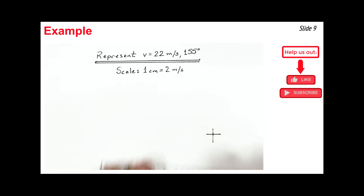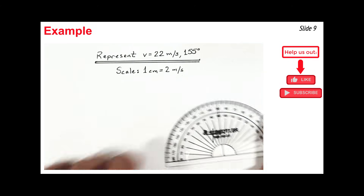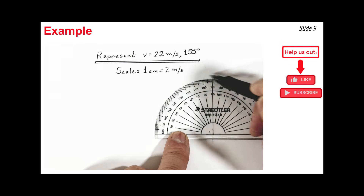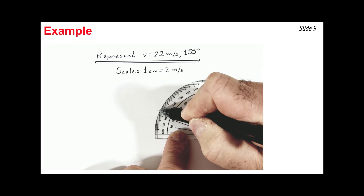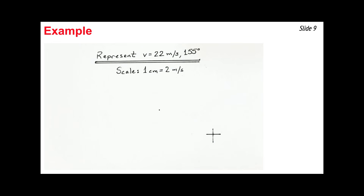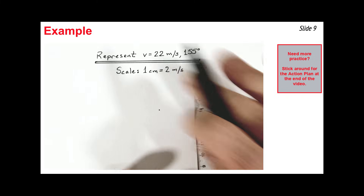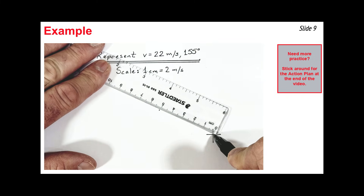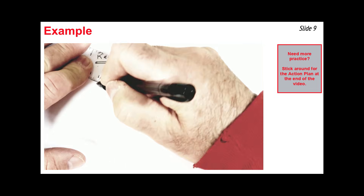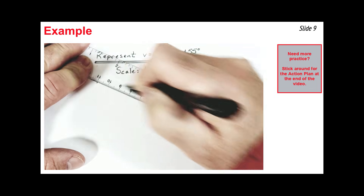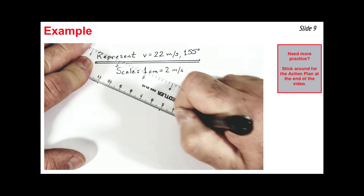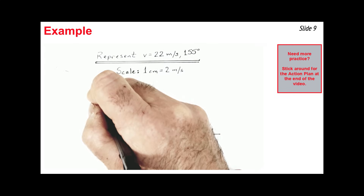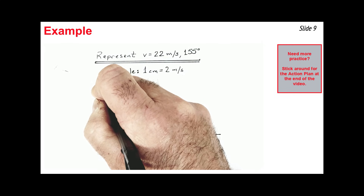I place the protractor so its origin is at the cross, measure around the perimeter to 155 degrees, and put a dot down as my reference point. Then I take my centimeter ruler, align the zero point with my starting point through the reference point, and mark the 11-centimeter point along the ruler. I draw the vector from the starting point through the reference point to the endpoint, then put an arrowhead on the end to indicate the direction the vector is heading.